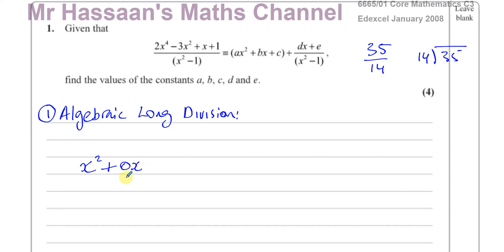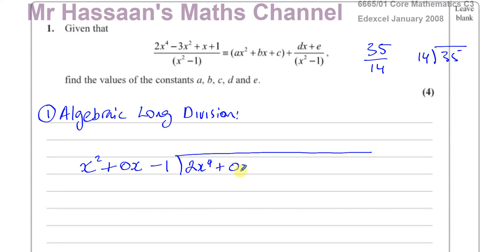The same thing applies for what goes inside. You're going to have 2x to the power 4, and then the x cubed term is missing, so you put plus 0x cubed, then minus 3x squared, plus x, plus 1. Only the x cubed term is missing inside, and only the x term is missing in the denominator. The reason for writing these as 0 is to keep everything in the right place when you continue.